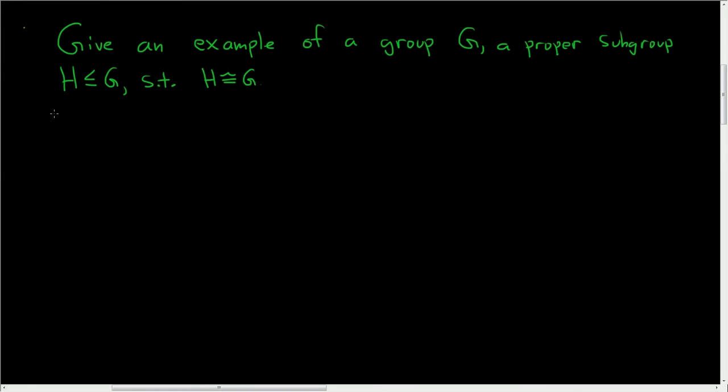So when I first saw this, I thought, wow, how can that be? If it's a proper subgroup, then it has to have less elements, right? So what's the deal?